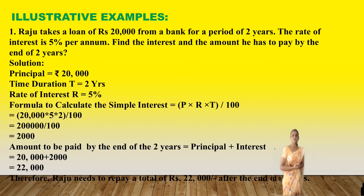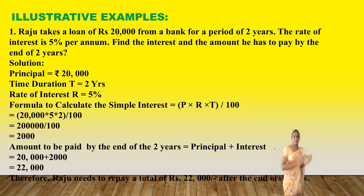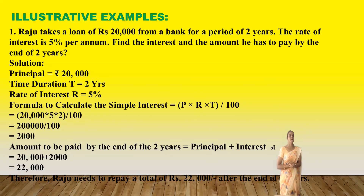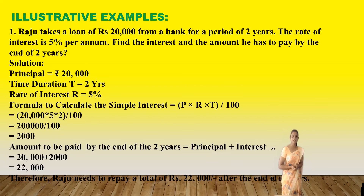Now that we have calculated the interest, we need to calculate the total amount to be paid by the end of two years. Amount = Principal + Interest = ₹20,000 + ₹2,000 = ₹22,000. Therefore, Raju needs to pay a total of rupees 22,000 at the end of two years. We will see a few more examples in our next video. Thank you everyone.